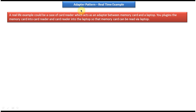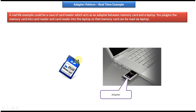Now we will see a real-time example of Adapter Design Pattern. On the left side you have a memory card and on the right side you can see a laptop, and you can see a card reader here. Suppose you have saved 100 photos in this memory card — all are in JPEG format. You want to copy the photos from this memory card to your laptop and watch those photos from your laptop.